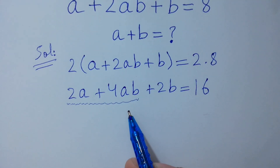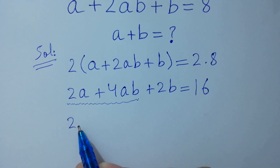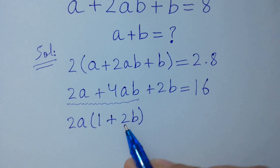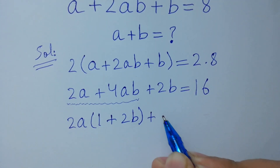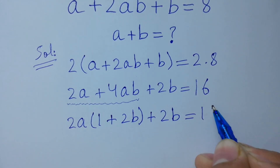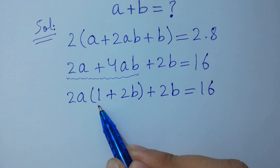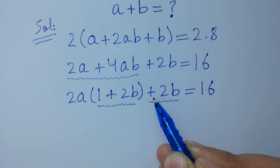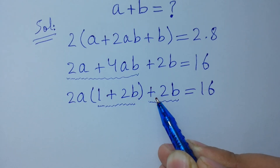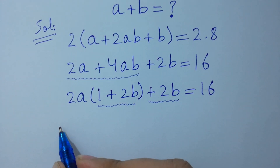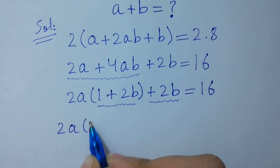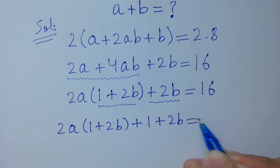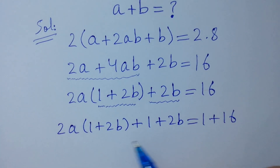We can factor out 2a: 2a times (1 plus 2b) plus 2b is equal to 16. To complete the factorization, add 1 on both sides: 2a times (1 plus 2b) plus (1 plus 2b) is equal to 17.